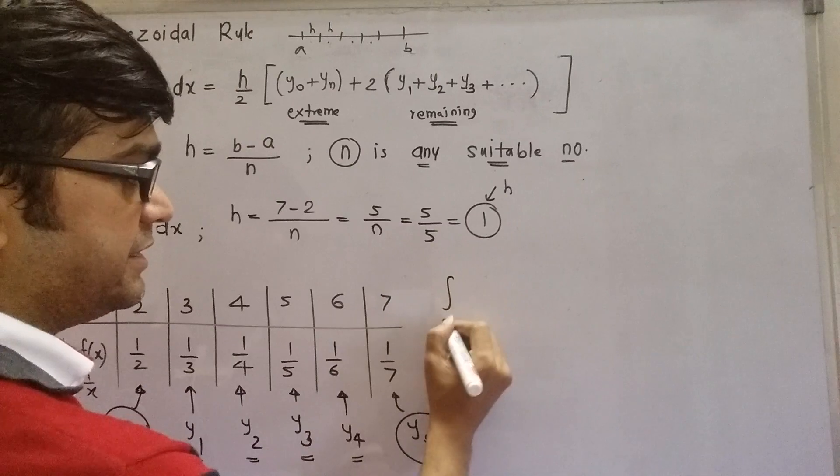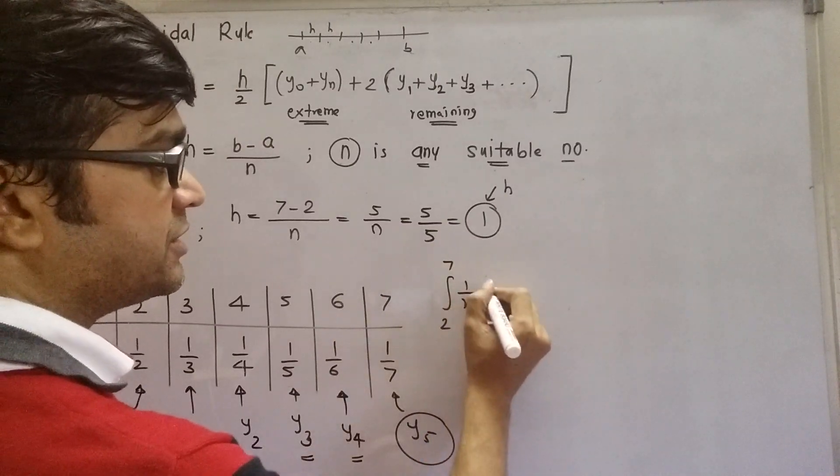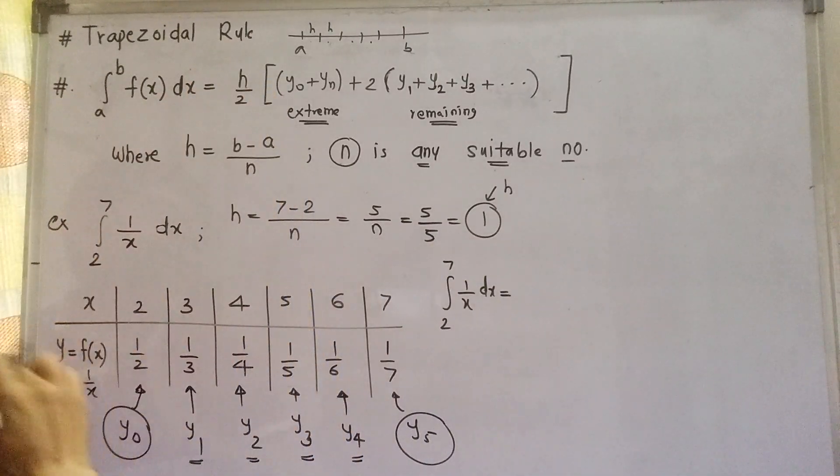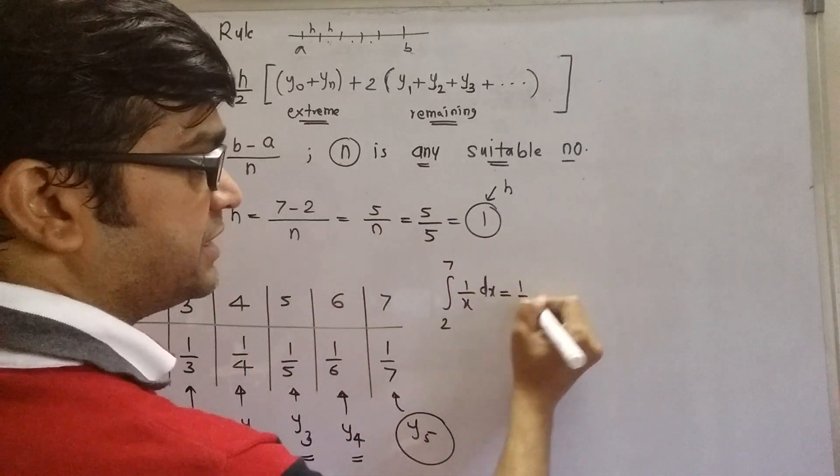We get integral 2 to 7, 1 by x dx equals to h by 2. h was 1, so it is 1 by 2.